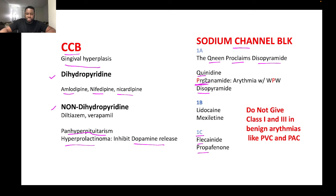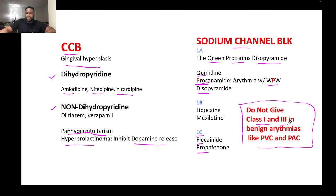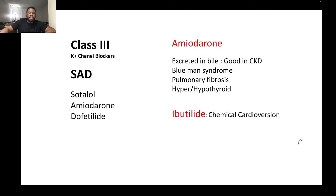In Class 1a, procainamide is used for arrhythmias in Wolff-Parkinson-White (WPW) syndrome. Important note: do not give Class 1 or Class 3 antiarrhythmics for benign arrhythmias like PVCs and PACs.